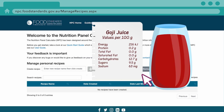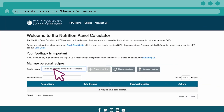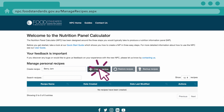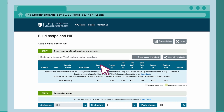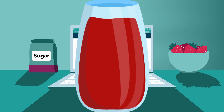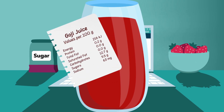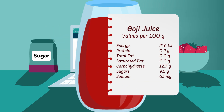Begin creating an NIP by entering the name of your recipe, then click Create Recipe. Custom ingredients should be used where you have data specific to your ingredients, or your ingredients are not in the NPC database.